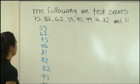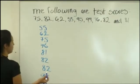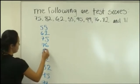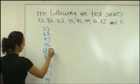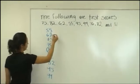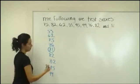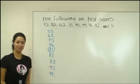So the median is going to be 81. Counting 1, 2, 3, 4 from one end and 1, 2, 3, 4 from the other — that's the median.